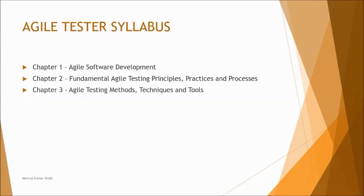Let's talk about the syllabus of the Agile Tester Extension. This certification is also known as Agile Tester Foundation Level or Agile Tester Extension — they all mean the same thing. There is only one level called Agile Tester. We will have three chapters to cover across the entire syllabus: Chapter one is about the basics and fundamentals of the Agile software development model. Chapter two is about fundamental Agile testing principles, practices, and processes. Chapter three is about Agile testing methods, techniques, and tools. Three chapters doesn't mean limited content — they contain many subtopics, almost equivalent to four or five chapters in depth.